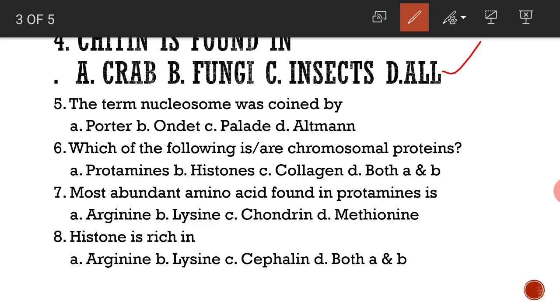The term nucleosome was coined by Ondate. Which of the following are chromosomal proteins? The options are protamines and histones, and of course both A and B is the answer, as both protamines and histones are associated with chromosomes.